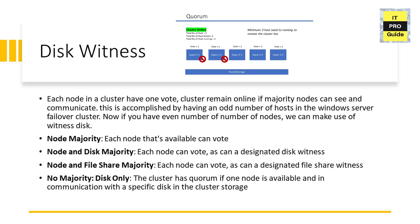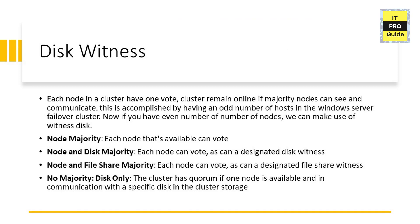The first option is node majority — each Hyper-V host participating in the cluster has 1 vote, and if majority is live, the cluster continues to work. Then we have node and disk majority — each node has 1 vote, plus we add 1 disk to the quorum as a witness. For example, with 2 Hyper-V hosts and a disk witness, total votes are 3. If Hyper-V 1 fails, Hyper-V 2 and the disk witness are still running and can see each other, keeping the cluster online.